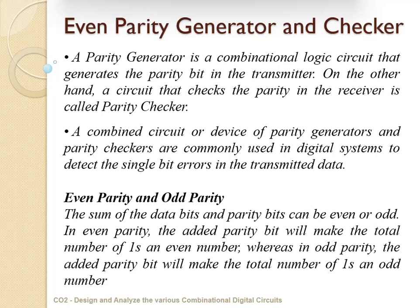A parity generator is a combinational circuit that generates the parity bit in the transmitter. On the other hand, a circuit that checks the parity in the receiver is called a parity checker. A combined circuit or device of parity generators and parity checkers are commonly used in digital systems to detect single bit errors in the transmitted data. Parity generators are classified into two: odd parity generator and checker, and even parity generator and checker.